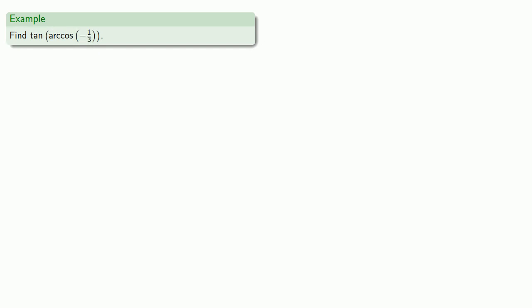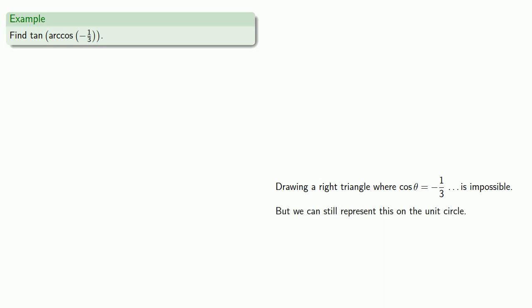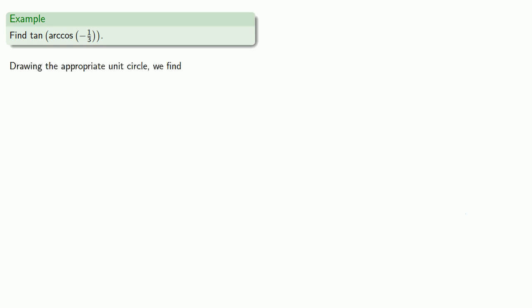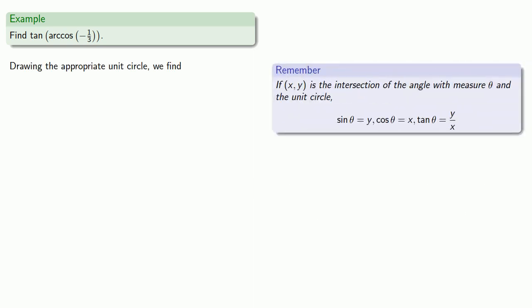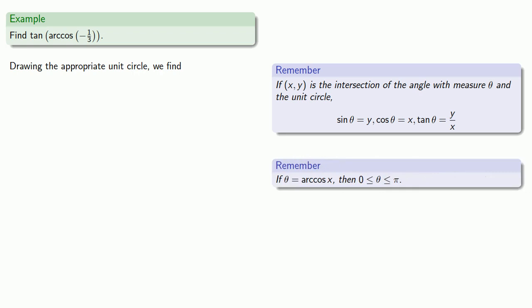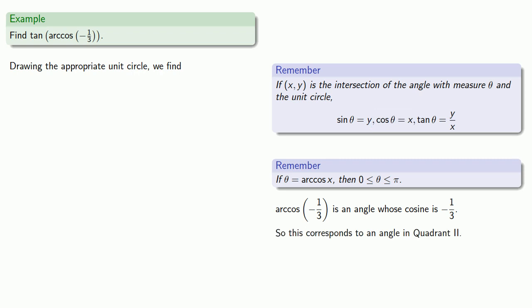What if we have a negative argument — the tangent of the arc cosine of negative 1 third? Drawing a right triangle where cosine of theta is negative 1 third is impossible, but we can still represent this on the unit circle. If (x, y) is the intersection of the angle with measure theta and the unit circle, then sine is our y coordinate, cosine is our x coordinate, and tangent is y divided by x. If theta is the arc cosine, then theta has to be an angle between 0 and pi, putting us in quadrant 1 or 2. Arc cosine of negative 1 third is an angle whose cosine is negative 1 third, so since cosine is the x value and our angle must be between 0 and pi, this corresponds to an angle in quadrant 2.